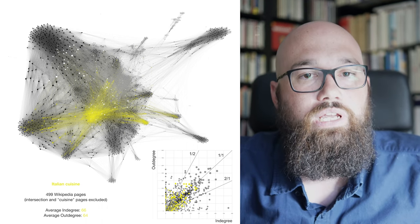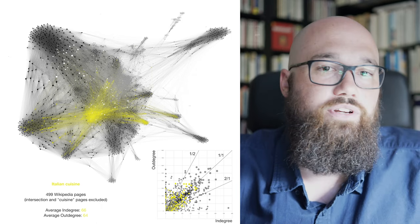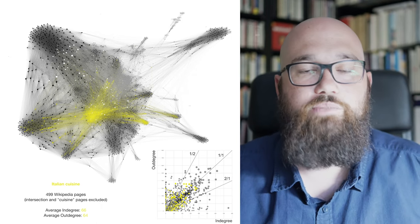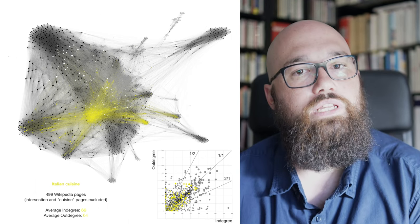Italian is very central, which will probably be interpreted by food historians in certain ways, but here we are just qualifying this position because we want to speak only about the network itself.